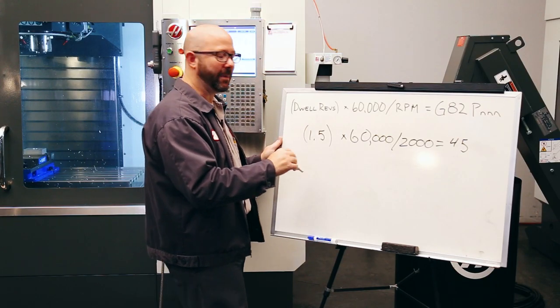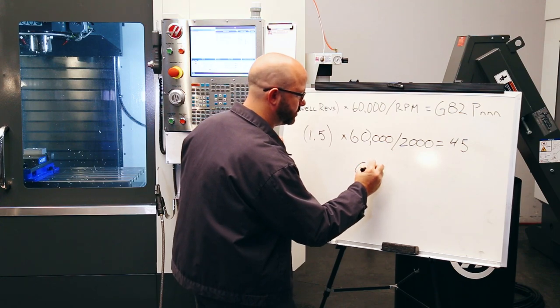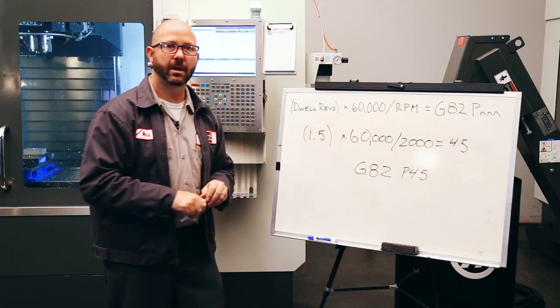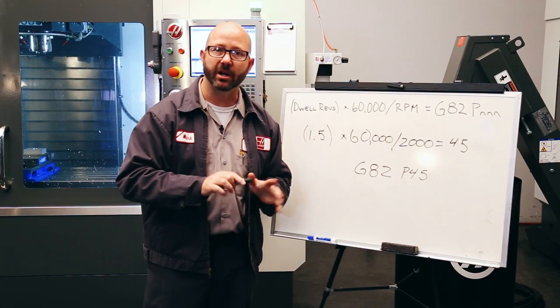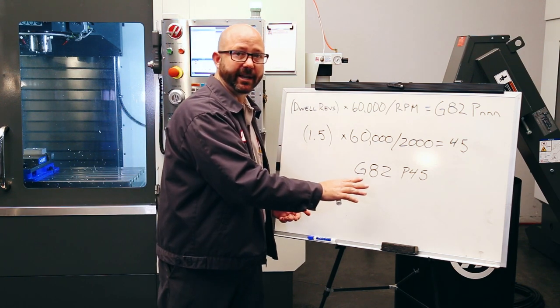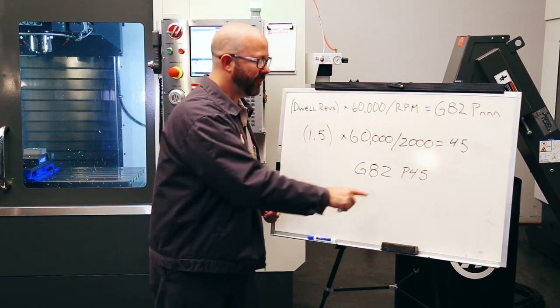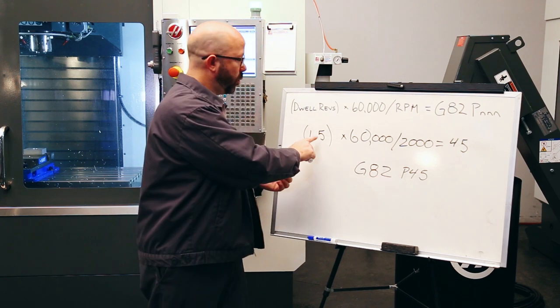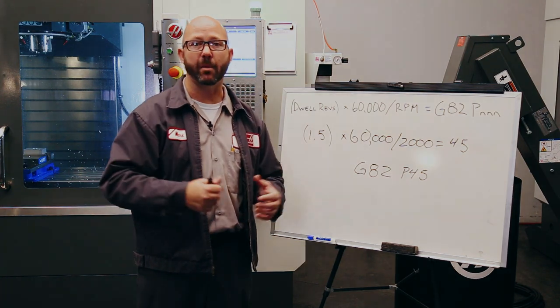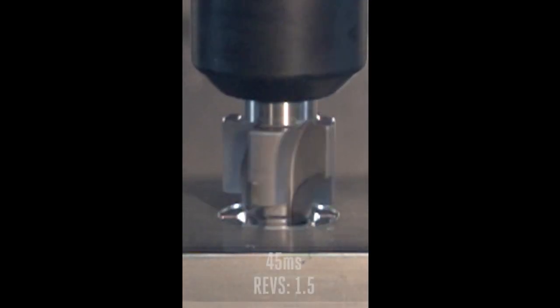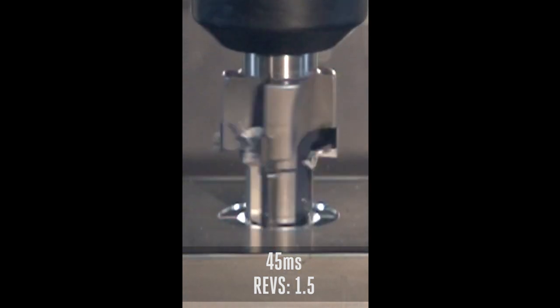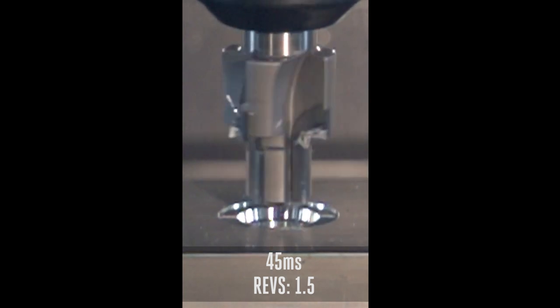That means that in my program I'm gonna command a G82. We're gonna use a P value of 45. At 2,000 RPMs, my port contour tool is gonna dwell for 45 milliseconds. I'm not using a decimal point. 45 milliseconds, which is gonna give us one and a half full revolutions of dwell, which is plenty to clean up our part. 45 milliseconds, that's our perfect Goldilocks dwell time at 2,000 RPMs to give us our one and a half full revolutions.